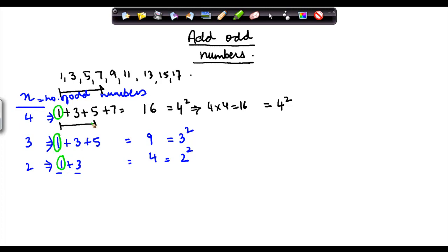The number of odd numbers I took, which is say 4 in this case—I took the sum of 4 consecutive odd numbers. Here I took the sum of 3 consecutive odd numbers, and here I took the sum of 2 consecutive odd numbers. The sum is always equal to the number of odd numbers squared.